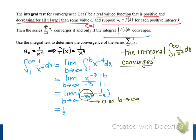And we know that the outcome for the series is going to be the same outcome for our improper integral using the integral test. And so that means that since our improper integral converges, the series from n equals 1 to infinity of 1 over n to the fourth also converges. And so that's our final result using the integral test.